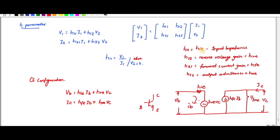So I can write it as HIE. Since it is a common emitter configuration, I can term it as HIE. If it is common base, I can use it as HIB. Likewise, H12.